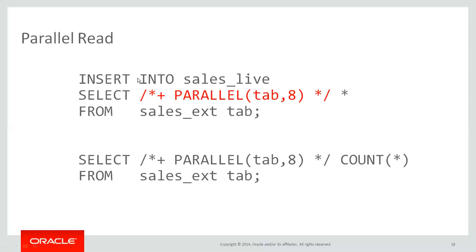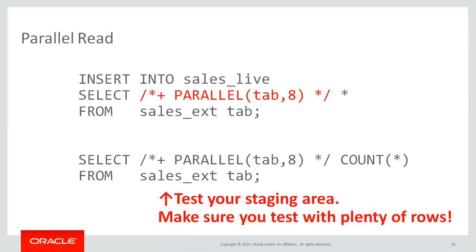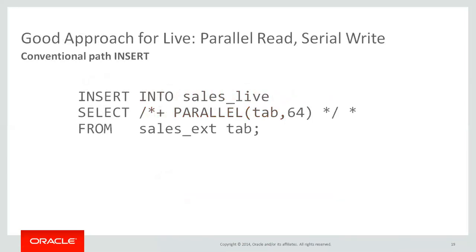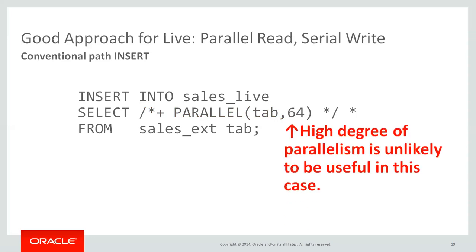The other side is the insert — this is a conventional path insert, which is actually a serial write through one process into the table. This is a great approach if you want to write data into live tables. It's a very easy technique: I'm reading my file system staging area very quickly using parallelism, but bear in mind that putting a high degree of parallelism isn't necessarily magic, because you're writing serially into your live table. What generally happens is you're waiting for the data to be written — not for the reading. So using a very high degree of parallelism probably isn't going to help you much, but it is something you can experiment with.